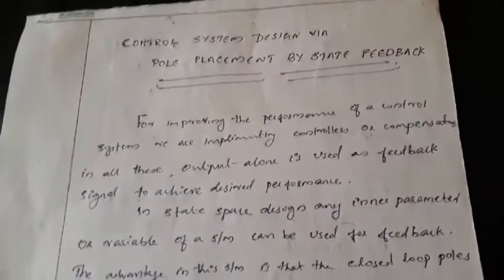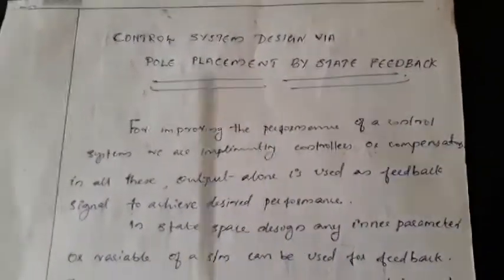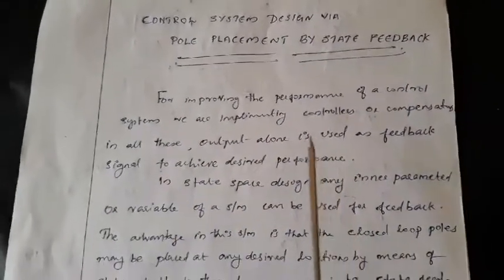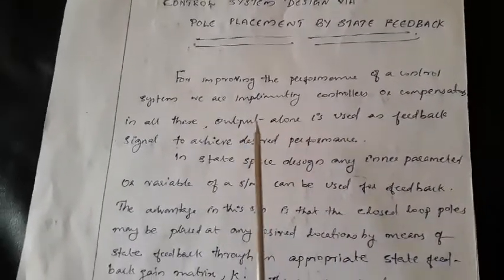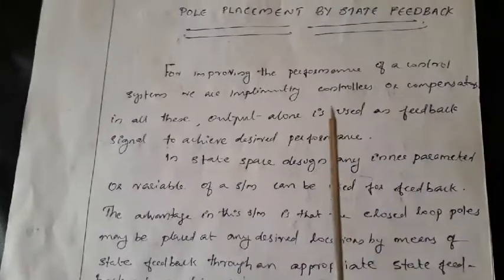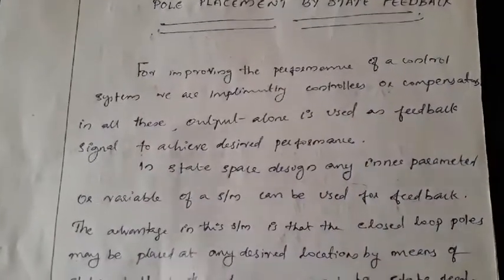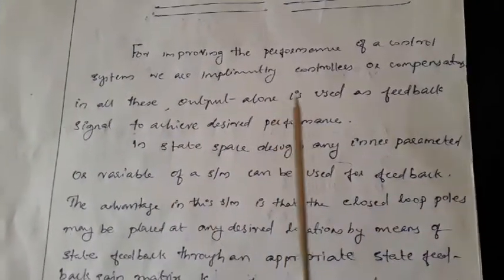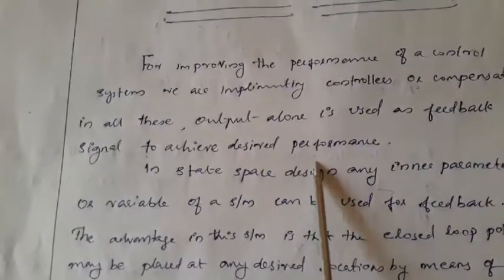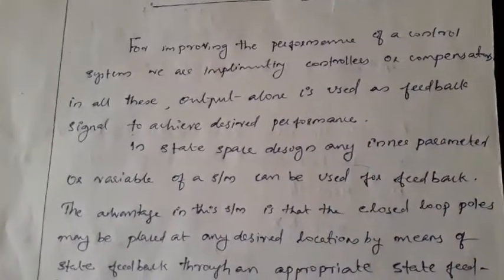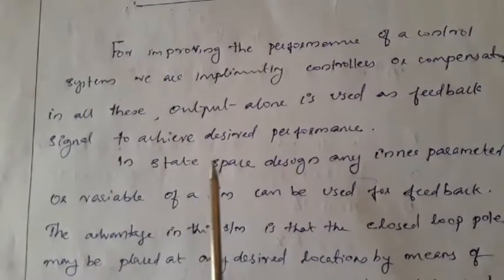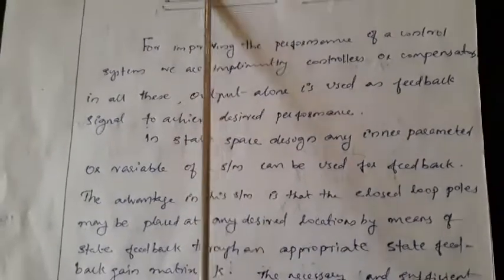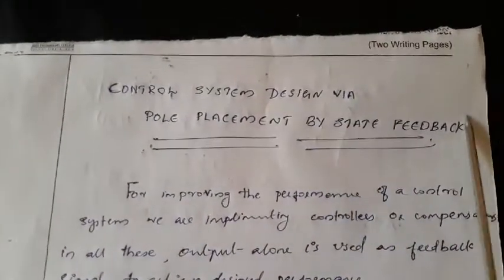Dear friends, today we are discussing about the control system design via pole placement by state feedback. For improving the performance of a control system, we are implementing controllers and compensators. We already studied about controllers and compensators. But in all these cases, output alone is used as a feedback signal to achieve the desired performance — the output is fed back to the input side. But in this topic, we are using state feedback.